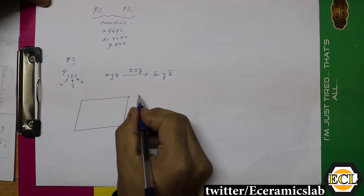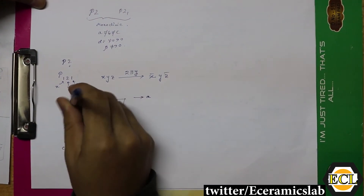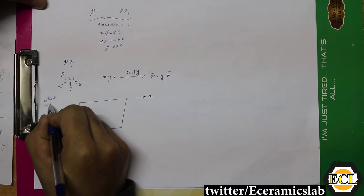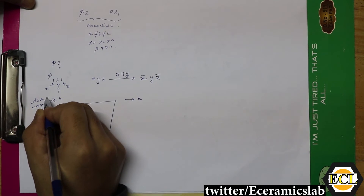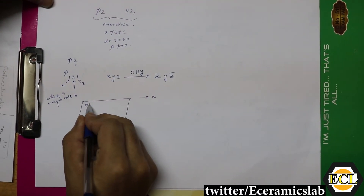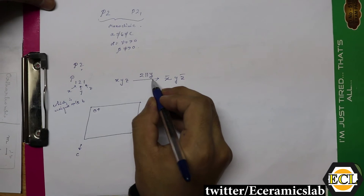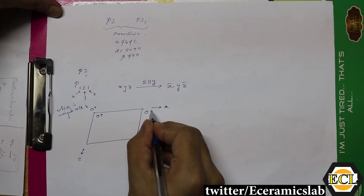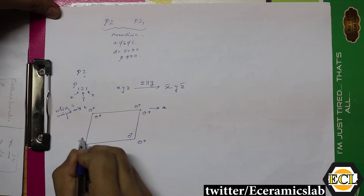To draw the equivalent point diagram, we consider the A axis, the C axis, and the B axis perpendicular to this plane — B is the unique axis. The XYZ position is marked here, and after applying two-fold rotation along the Y axis, the next point is here. These form the equivalent points within one unit cell, and the other equivalent points are distributed accordingly.